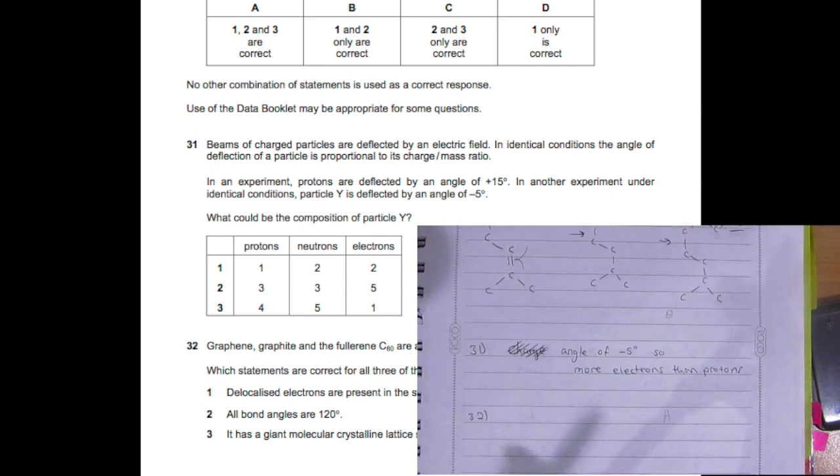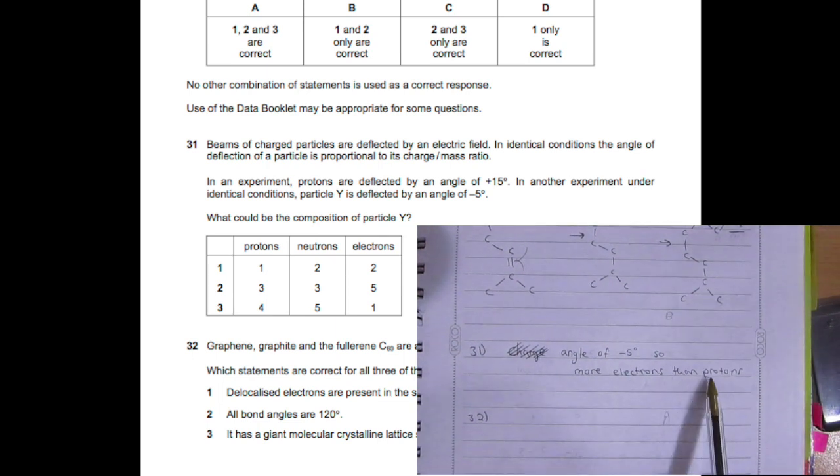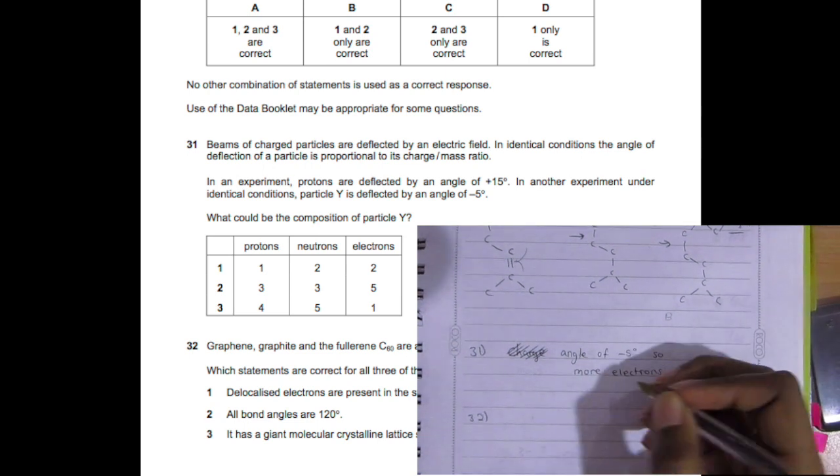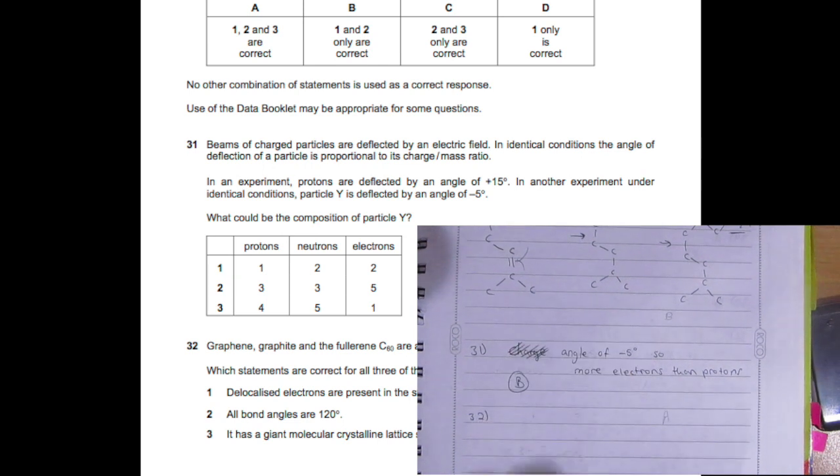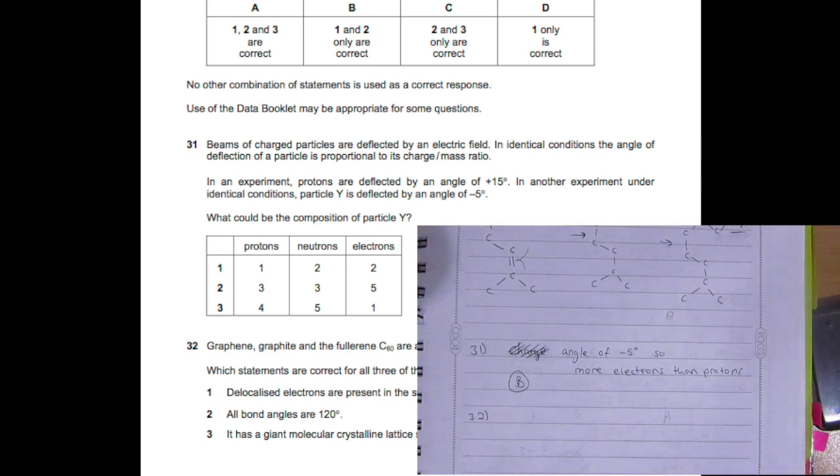In the experiment, protons are deflected by an angle of positive 15 degrees. In another experiment under identical conditions, particle Y is deflected by an angle of negative 5 degrees. You should think that obviously there should be more electrons than protons, so options 1 and 2 are correct and B would be your answer.